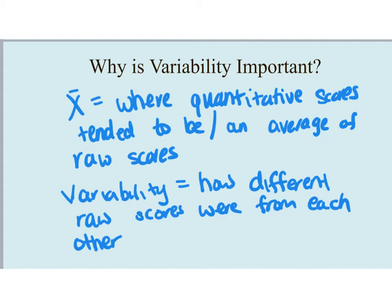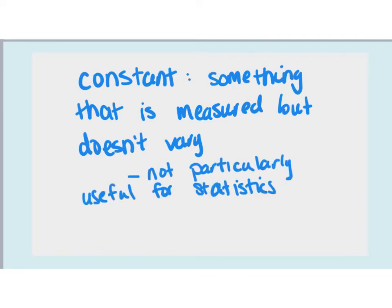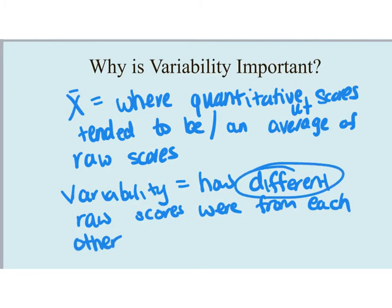With that we often discuss something called variability. To vary means to differ, so measures of variability indicate how different raw scores were from each other. The mean says here's where scores tended to be, and variability says here's how far apart scores tended to be. Just as there are different kinds of averages like the mean, median, and mode, there are different kinds of variability. A constant is something measured that doesn't vary, while variables are things we measure that do vary — scores must vary for us to do most statistical calculations.